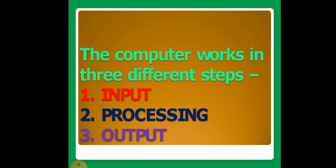The computer works in 3 different steps. How many steps? 3. They are input, processing and output. What are they? Input, processing, output. It should go in order. The first step is input. The second step is processing. And the third step is output.